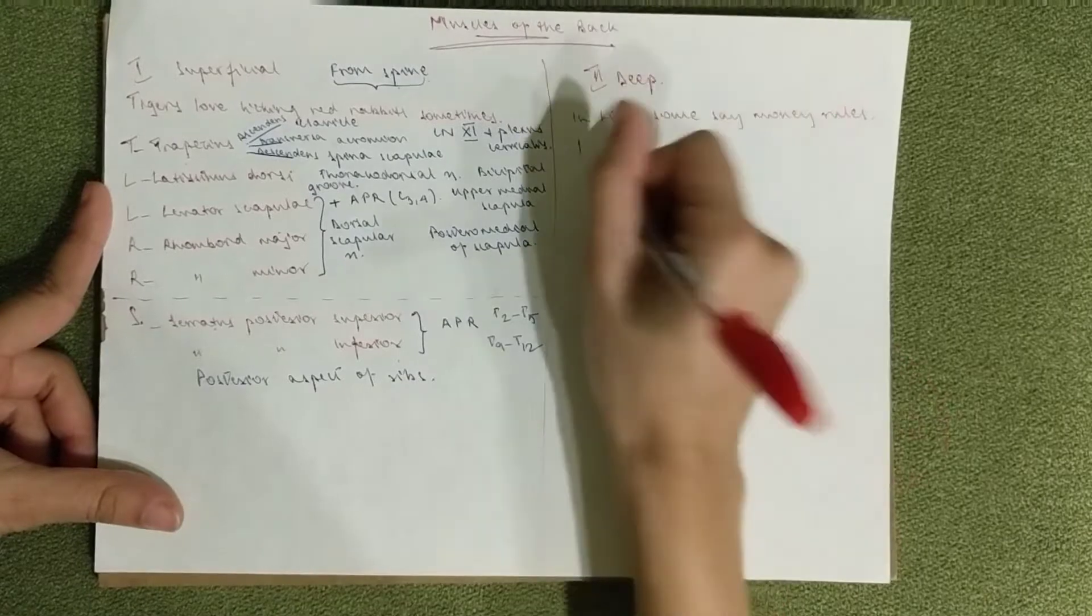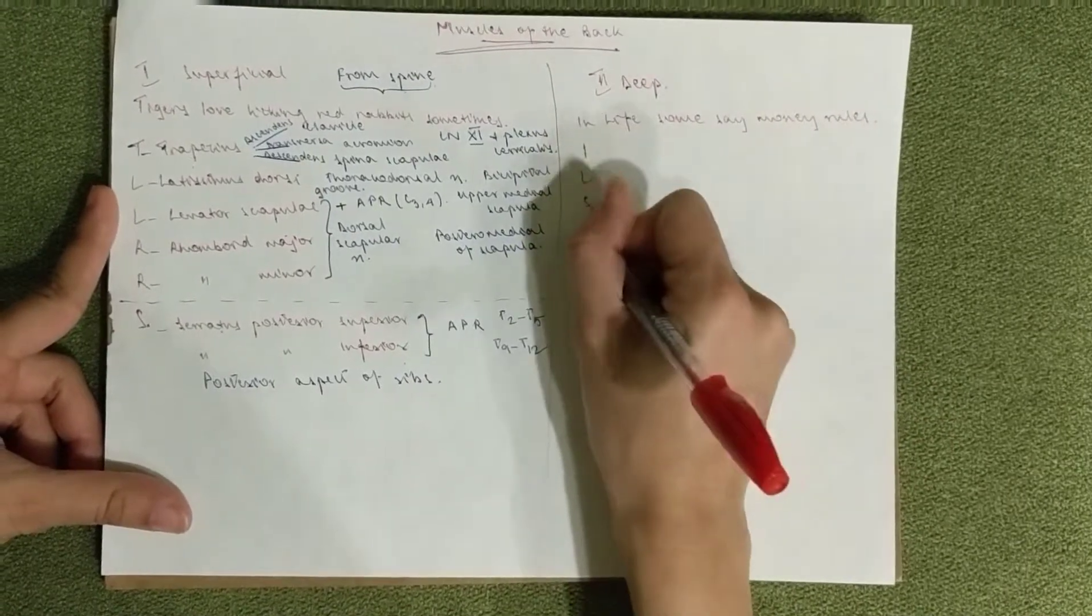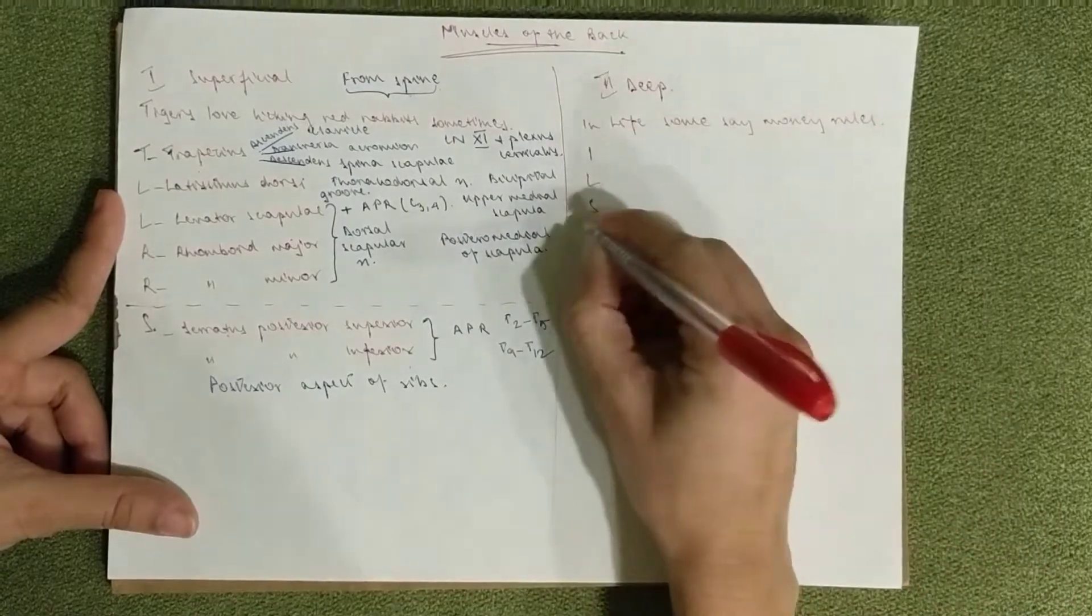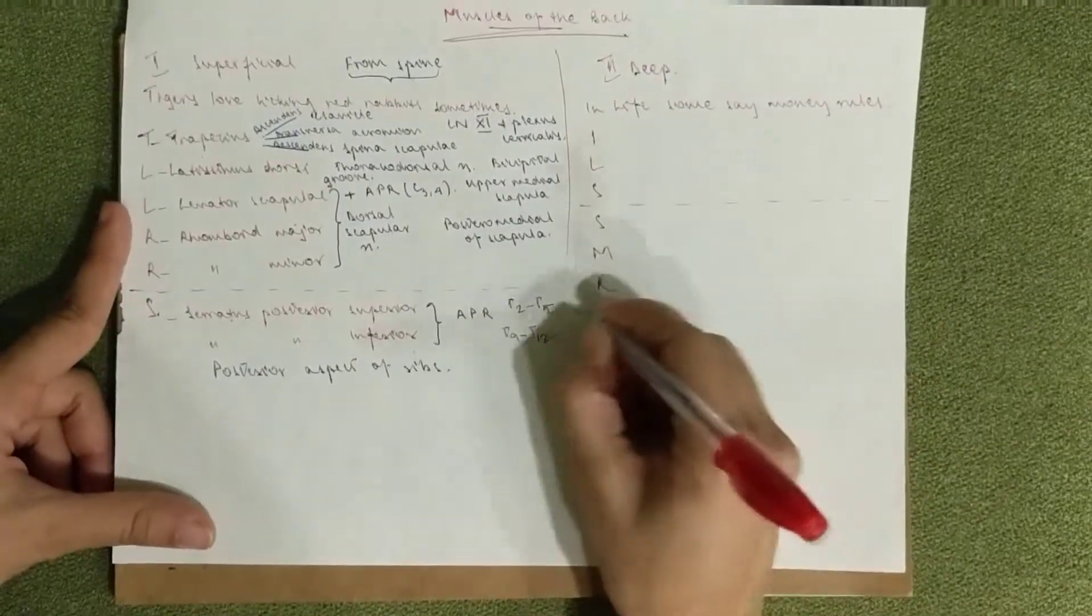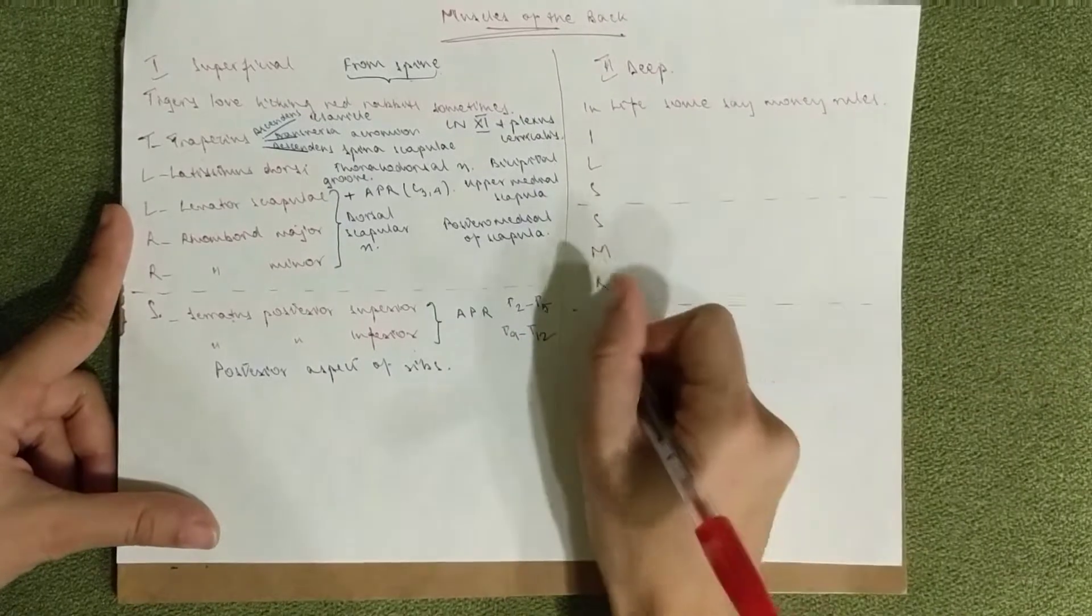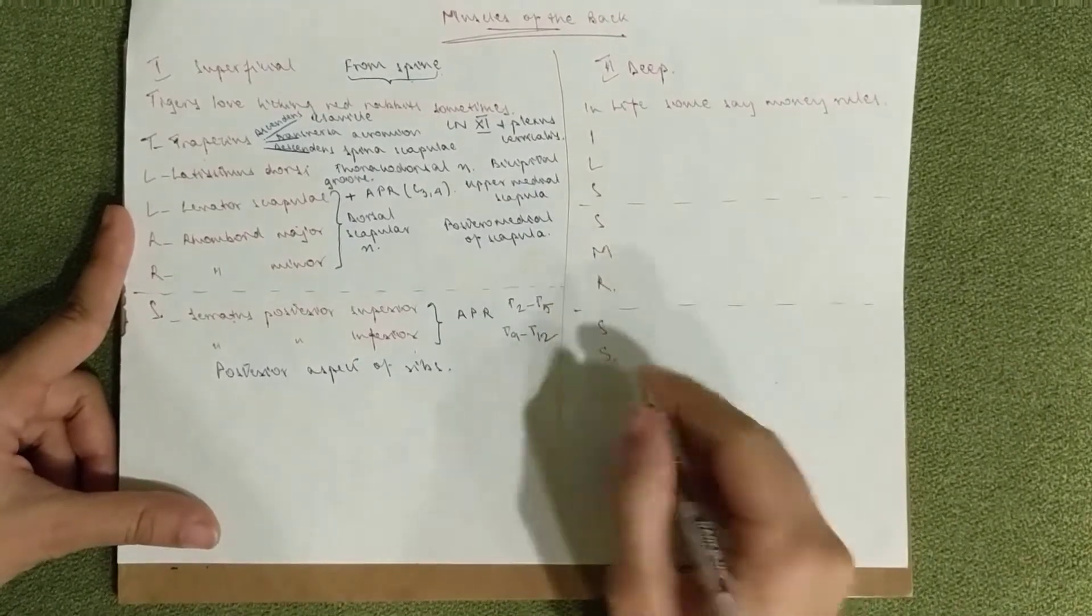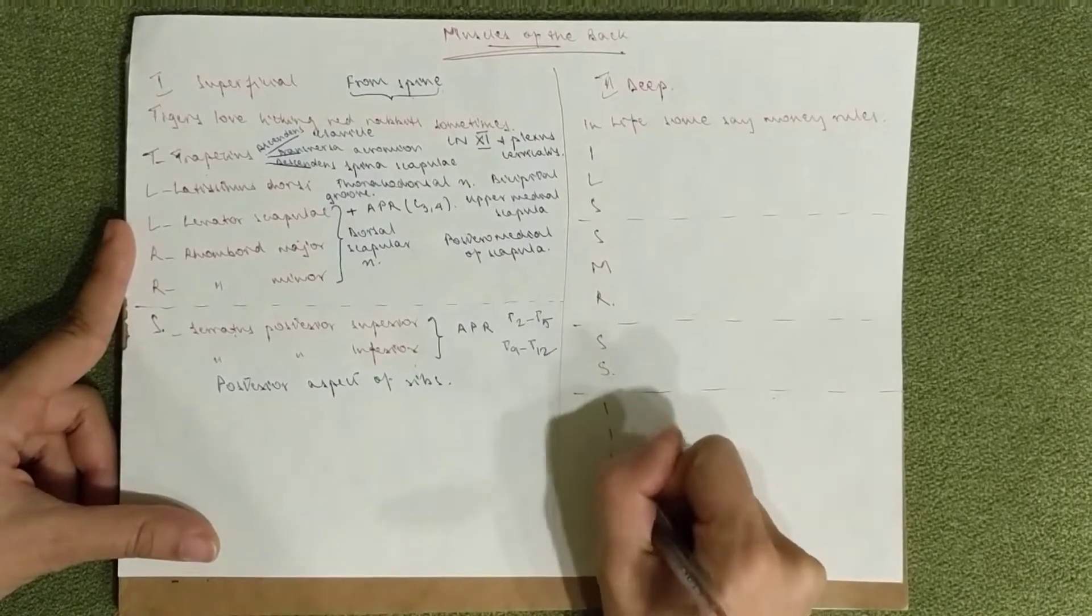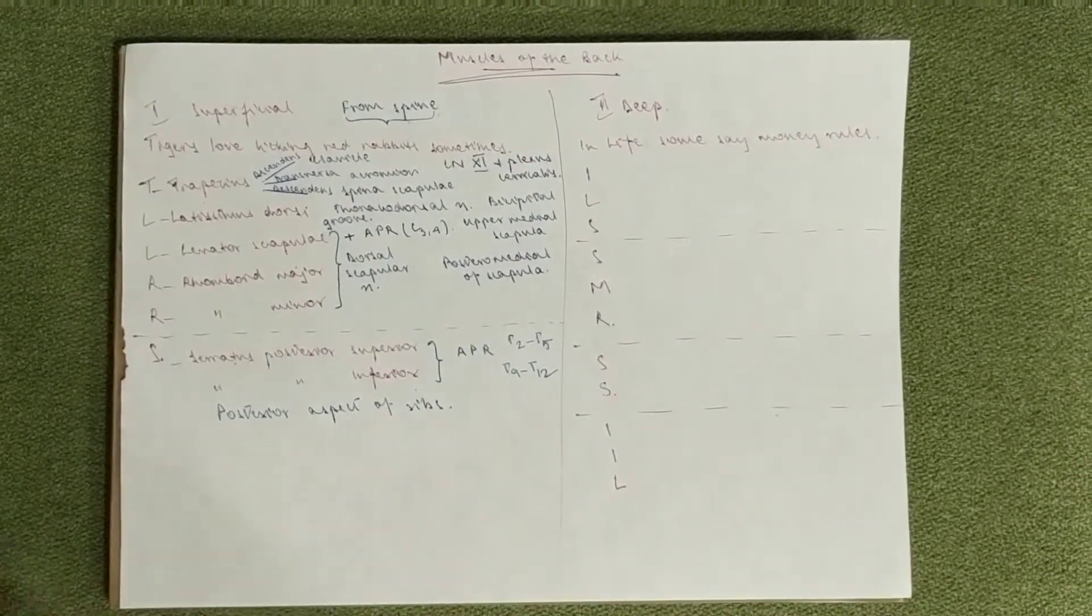First we'll write these ones and then we'll write the extra bits. So we've got I, L, S, S, M, and R. Those are two groups. Then we've got another group with S and S. And another group with I, I, and L.